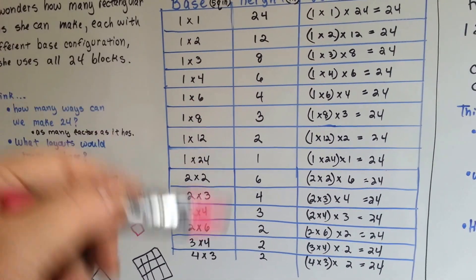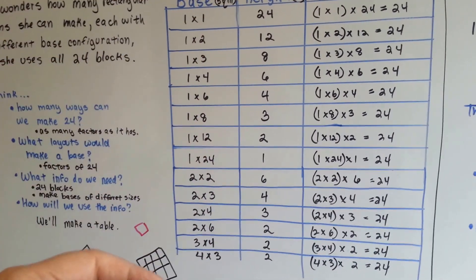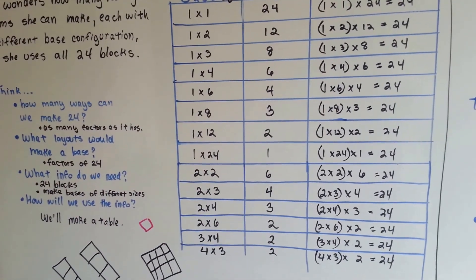We'd say, oh no, we already thought of that one. We're repeating ourselves. So making the table, it spells it all out and we can see each one separately.